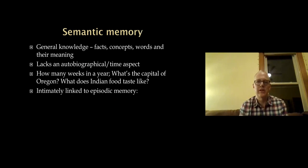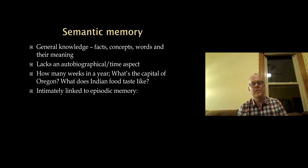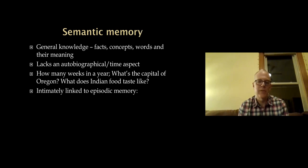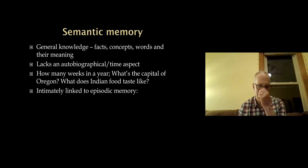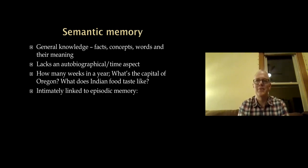Semantic memory is quite different — it's just general knowledge, facts, concepts, words and their meaning. Unlike episodic memory, it doesn't have much of an autobiographical or time aspect. For example, we all know that George Washington is the first president of the United States, but very few can remember when they learned that for the first time. Semantic memory covers things like how many weeks in a year, what's the capital of Oregon, what does Indian food taste like — just facts and things that you know.